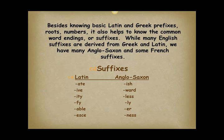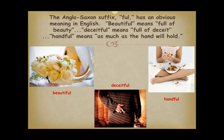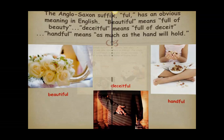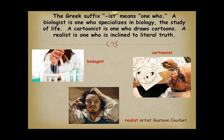Besides knowing basic Latin and Greek prefixes, roots, and numbers, it also helps to know the common word endings or suffixes. While many English suffixes are derived from Greek and Latin, we have many Anglo-Saxon and some French suffixes. The Anglo-Saxon suffix -ful has an obvious meaning in English: beautiful means full of beauty, deceitful means full of deceit, handful means as much as the hand will hold. The Greek suffix -ist means one who: a biologist is one who specializes in biology, the study of life; a cartoonist is one who draws cartoons; a realist is one who is inclined to literal truth.